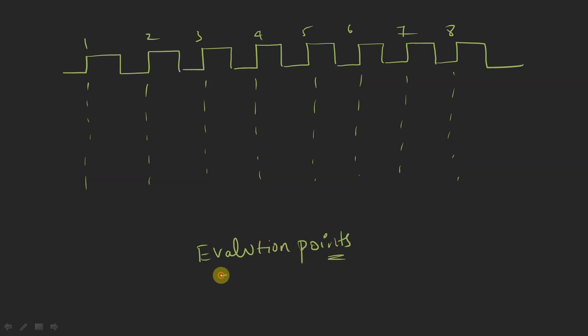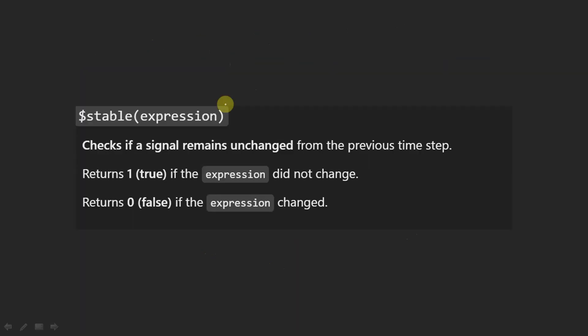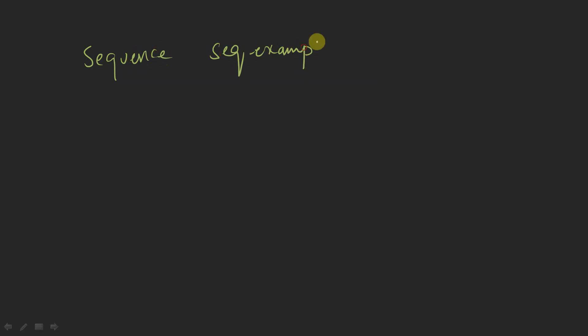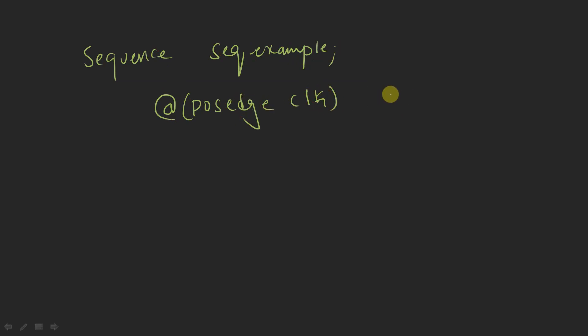Now let us take some signal — let's call it x. Let me write the code for that. The sequence name is `sq_example`, and this sequence is going to check at the positive edges of the clock: at `posedge clock`, `$fell(x)`. End sequence.